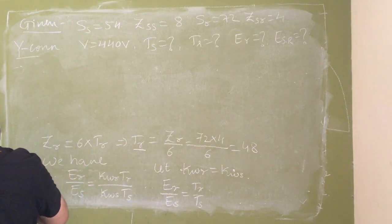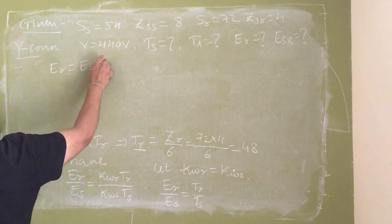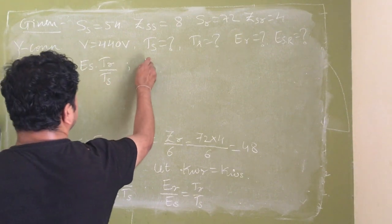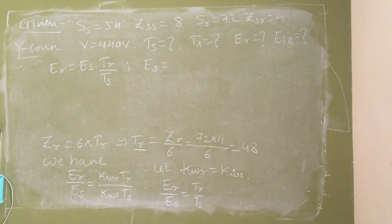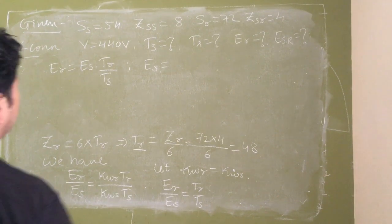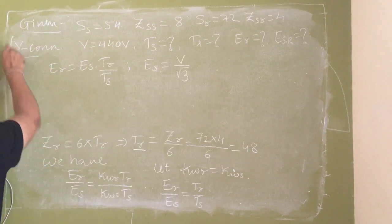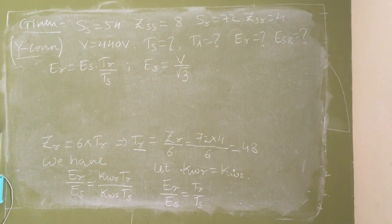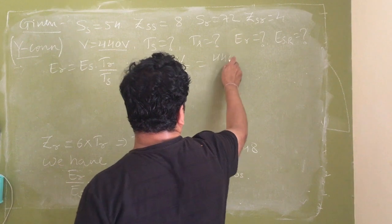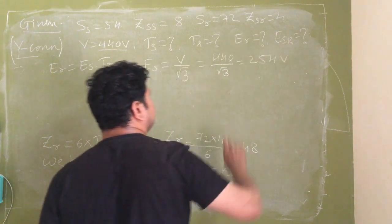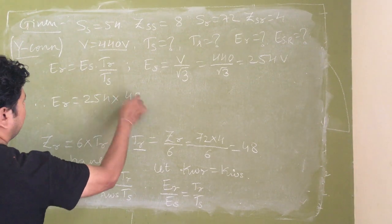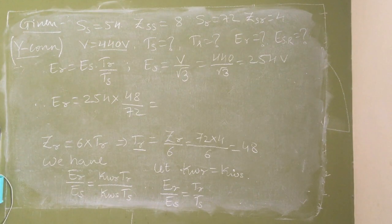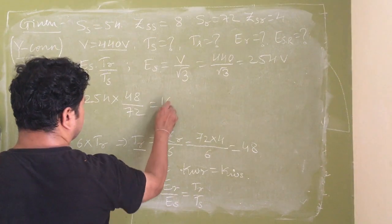ER = (TR / TS) × ES. ES is the per-phase induced EMF in the stator winding. Since the stator is connected in star, ES = V / √3 = 440 / √3 = 254 volts. Therefore ER = 254 × (48 / 72) = 169.33 volts.